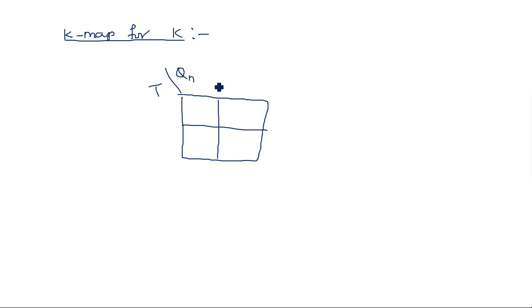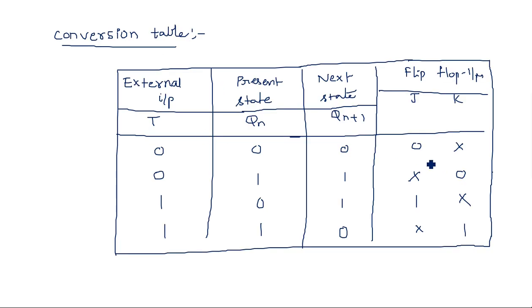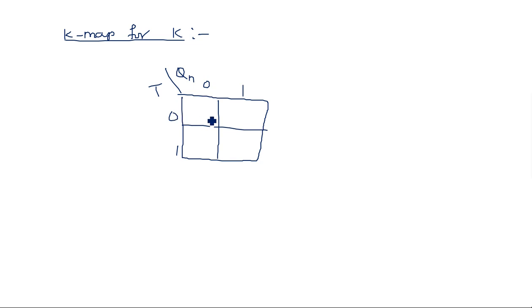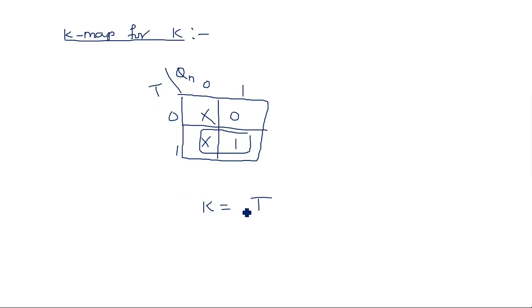Similarly, the K-map for K uses the same two-variable K-map with T and Qn. The outputs are X, 0, X, 1. Mapping these gives K = T as well. So both J and K equal T, meaning they receive the same input together.